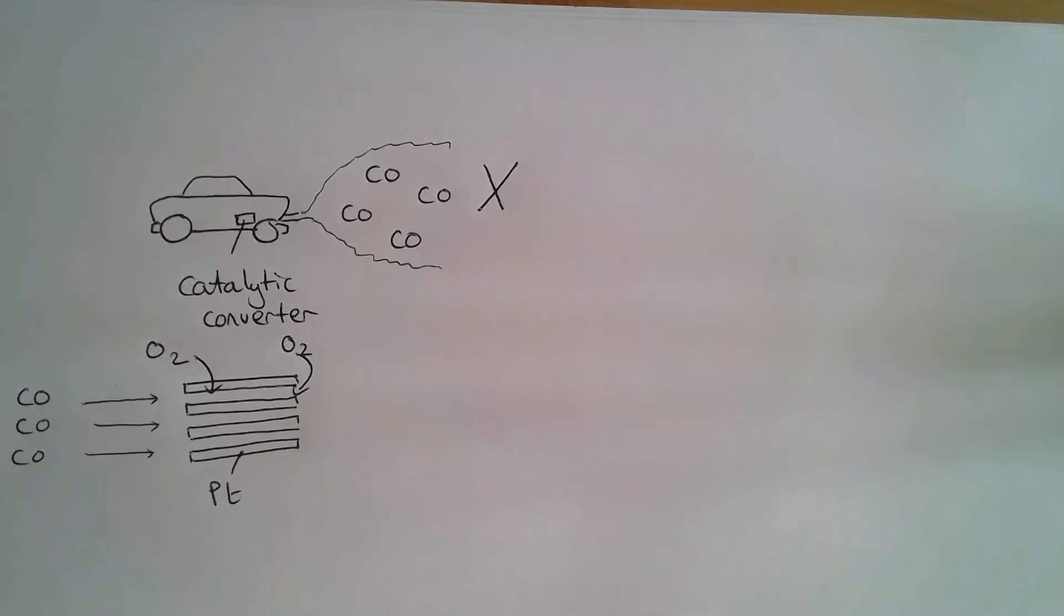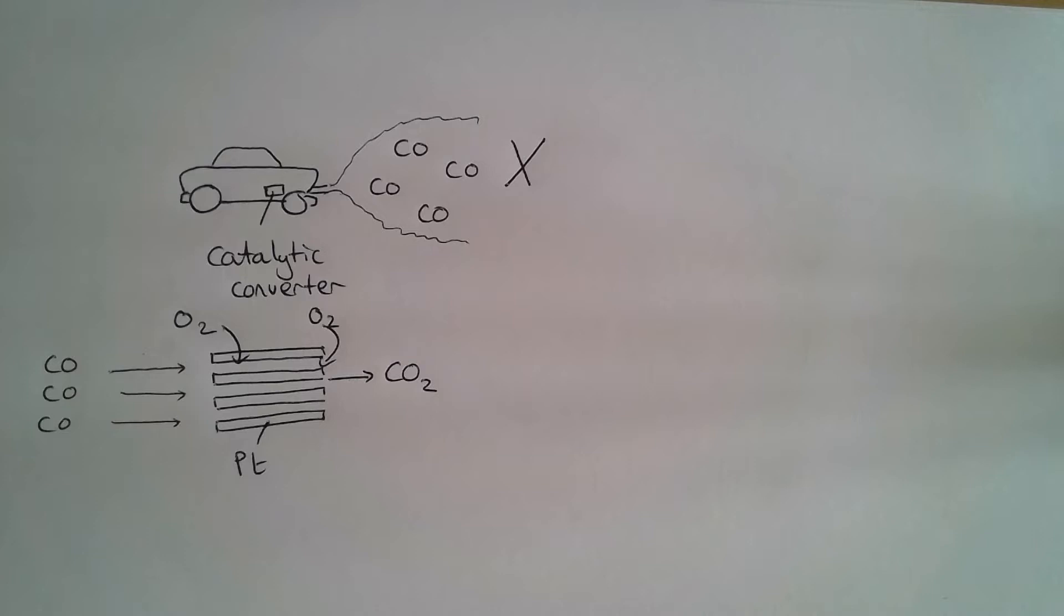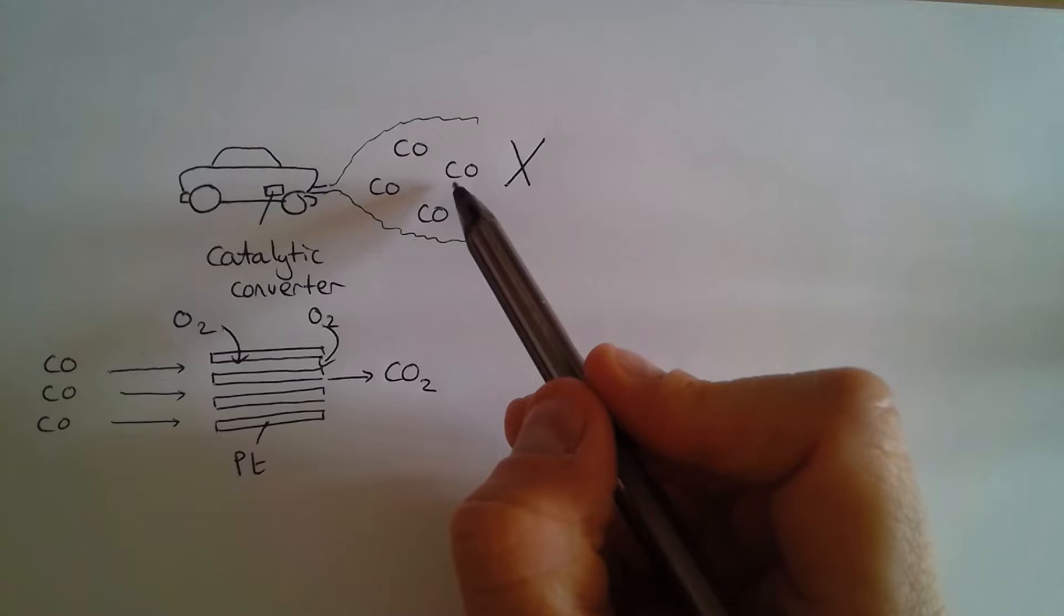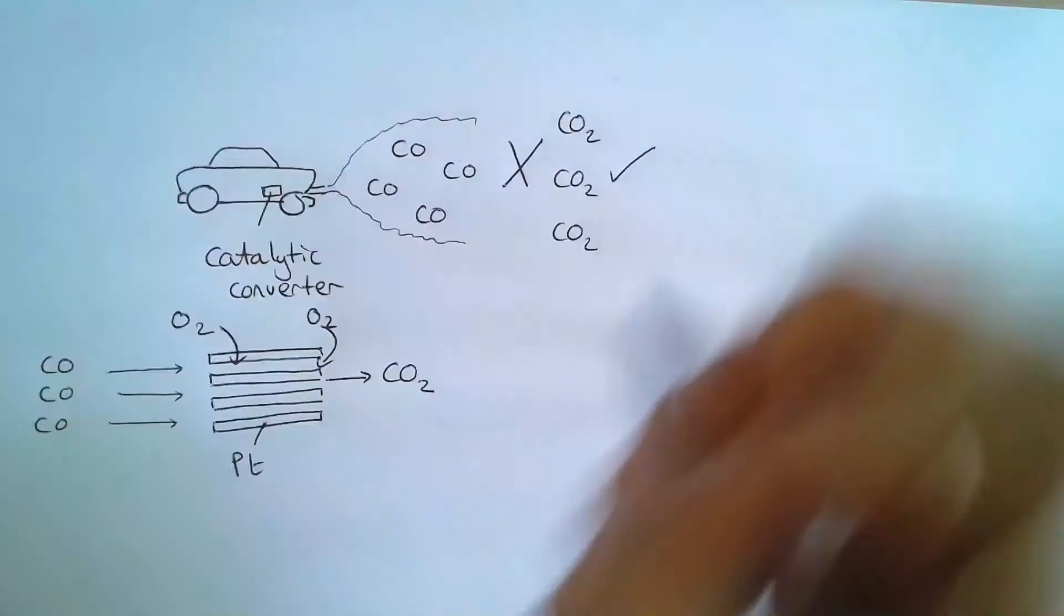Now that is a reaction that will actually happen by itself. Carbon monoxide will react with oxygen in the air and turn into carbon dioxide, but it'll do it very slowly. We need it to happen much quicker so we're not producing carbon monoxide from our car exhausts, but instead carbon dioxide. Carbon dioxide isn't great, but it isn't toxic.